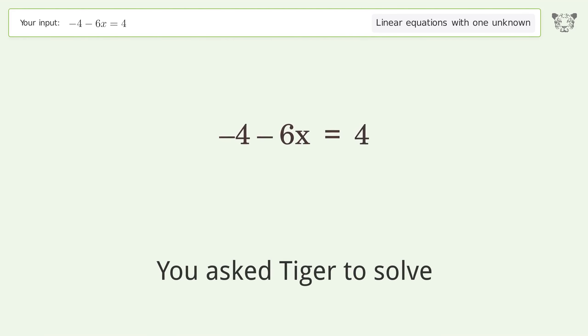You ask Tiger to solve this. This deals with linear equations with one unknown. The final result is x equals negative 4 over 3.